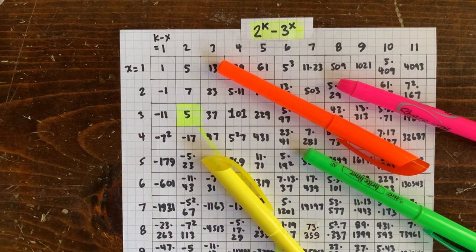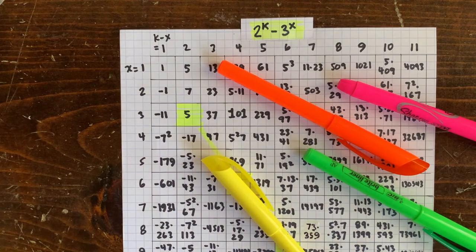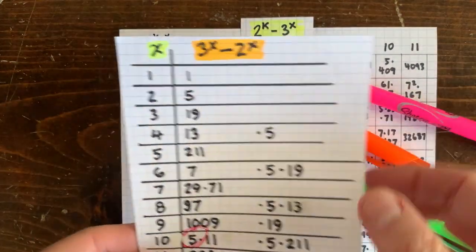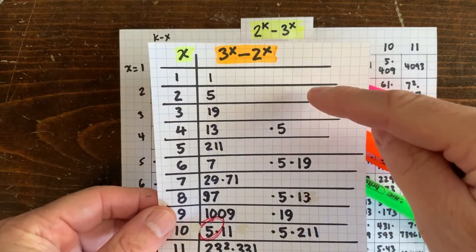Whereas for 3 to the x minus 2 to the x, there was only one ray of sunshine and it started at the number 1. So 1 got inherited to every cell along the ray. But who cares about 1? We didn't even write it down.